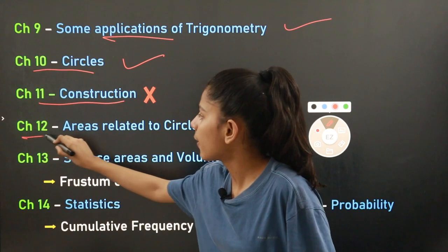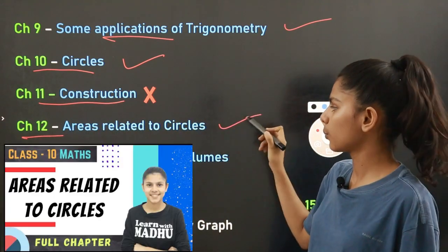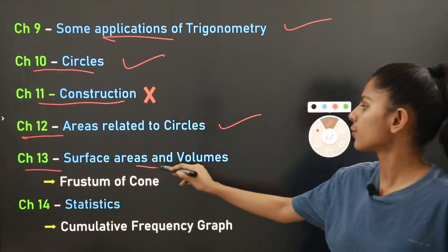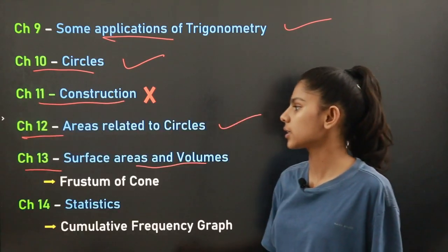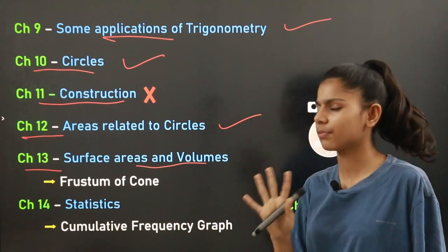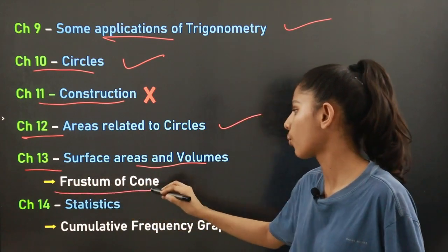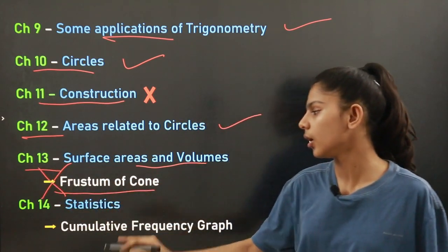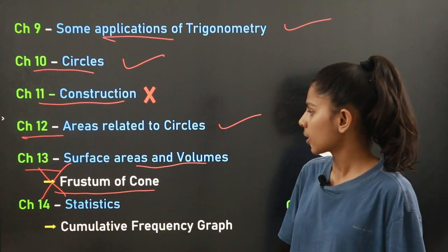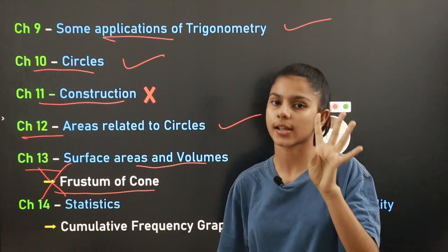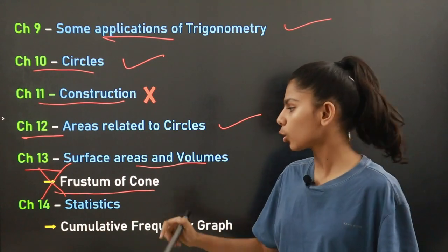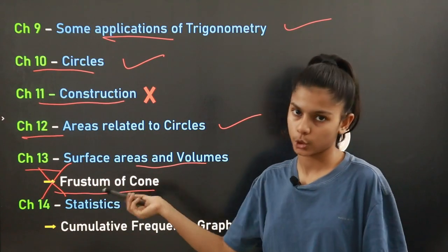Chapter number twelve is Areas Related to Circles. This is the whole chapter — nothing has been reduced. Chapter number thirteen is Surface Areas and Volumes. It has a total of 5 exercises, and the last topic — the frustum of a cone — has been reduced.